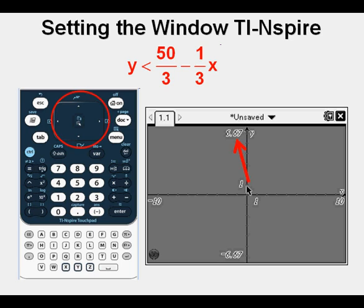From here we'll use the touchpad to make this cursor arrow at the center go up to where the 6.67 is at the top of the view screen. And when it's over the 6.67, which is the standard Y max setting,